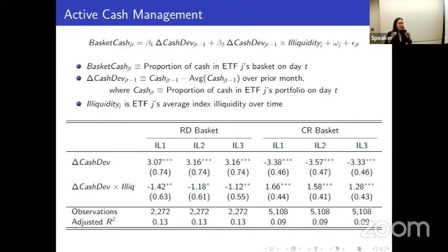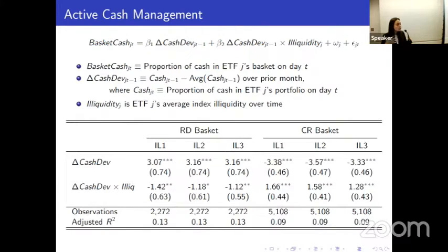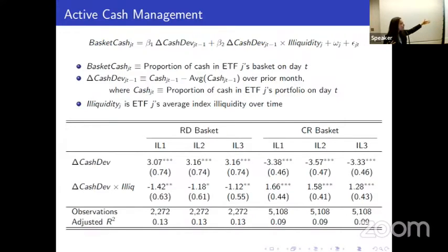We also test whether the ETF's ability to dynamically manage its cash position is attenuated when the index is illiquid. When the ETF holds more cash than usual, it will want to shed that cash — including it in redemption baskets to remove it from the portfolio, and excluding it from creation baskets. We find exactly this, but also that this ability is always attenuated when the index is more illiquid.